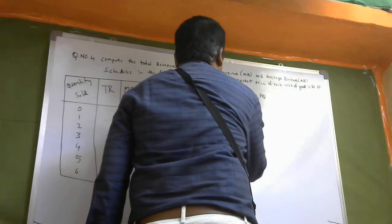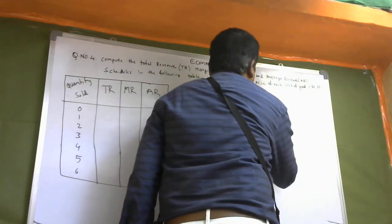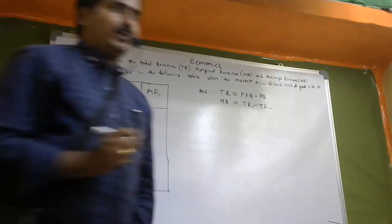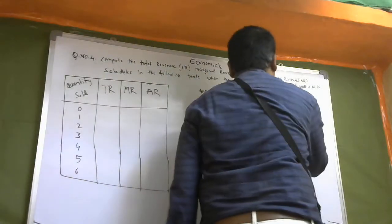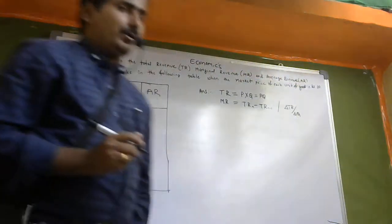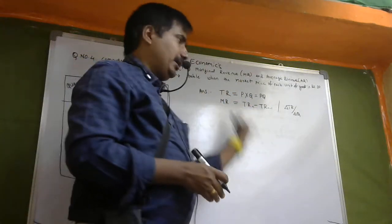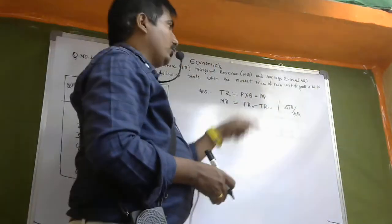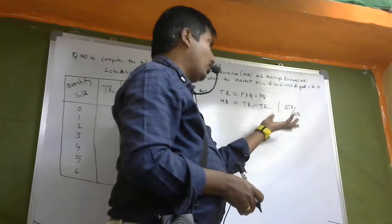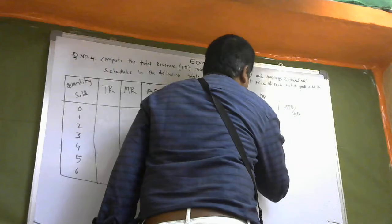Then MR — Marginal Revenue. Marginal Revenue is equal to TRn minus TRn-1. This is one formula for MR. Another formula is delta TR divided by delta Q. And last one, AR means Average Revenue. Average Revenue is equal to TR divided by Q.